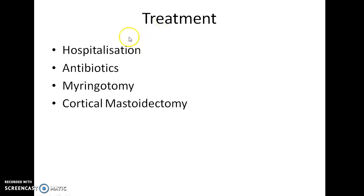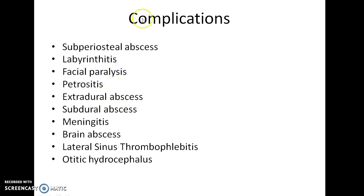Treatment of acute mastoiditis includes hospitalization, antibiotics, and surgery such as myringotomy or cortical mastoidectomy. The complications of acute mastoiditis are: subperiosteal abscess, labyrinthitis, facial paralysis, petrositis, extradural abscess, subdural abscess, meningitis, brain abscess, lateral sinus thrombophlebitis, and otitic hydrocephalus.